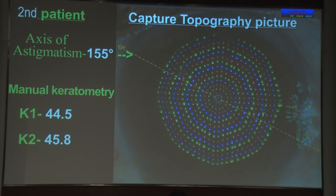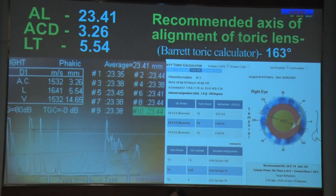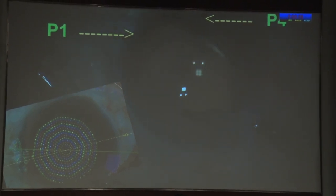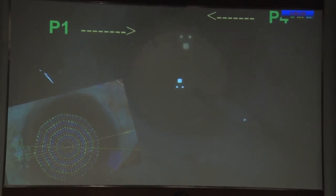Here is another patient as an example. Capture a topography picture; the system measures the axis of astigmatism, which is 155 degrees. Manual keratometry and immersion A-scan are performed. Barrett's toric calculator gives a recommended axis of alignment of 160 degrees. The toric marking app is used to mark the axis of alignment and site of incision on the topography picture. After final alignment, P1 and P4 Purkinje images are coincided to eliminate parallax error.